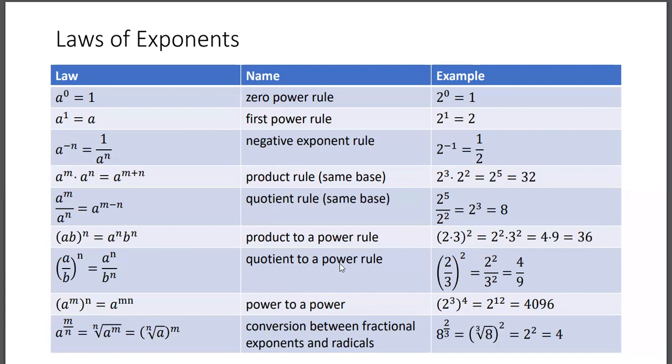Quotient to a power rule. A divided by b, that whole fraction to the nth power, is a to the n, the numerator, over b to the n, the denominator to the power. Example, two-thirds squared is the same as two squared over three squared, four over nine.